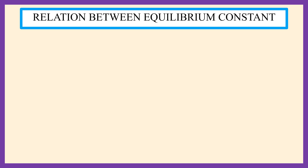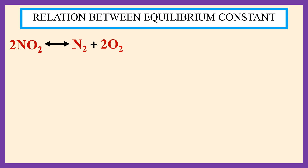For the reaction 2NO₂ → N₂ + 2O₂, the equilibrium constant is K₁.